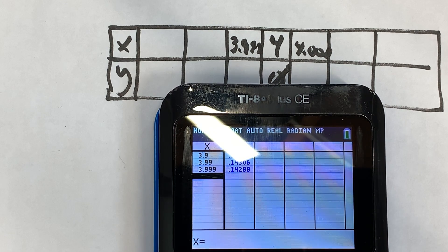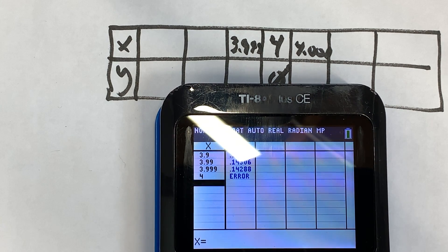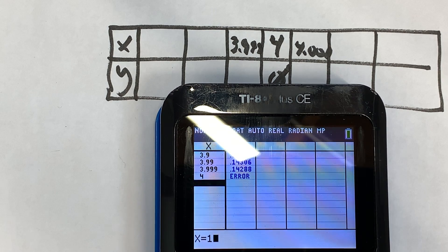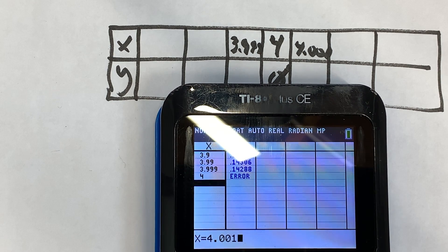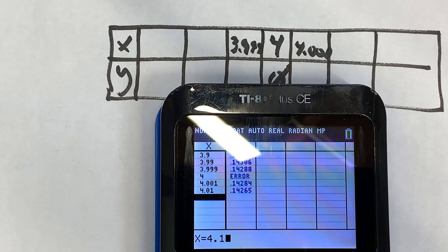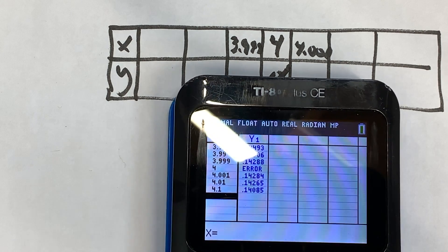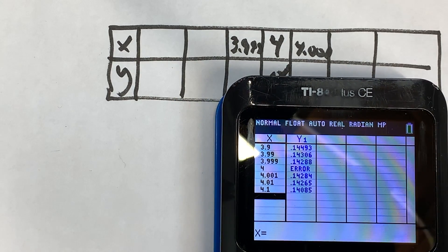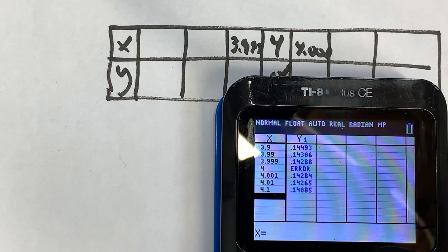If we put four in, notice how it gives us an error. And then if we put in slightly larger than four by a thousandth—4.001—slightly larger by a hundredth, that's 4.01, and then slightly larger by a tenth, 4.1. What you want to do here is make sure that when you're approaching four from below—meaning lower—and from above—higher—that they're approaching the same number.